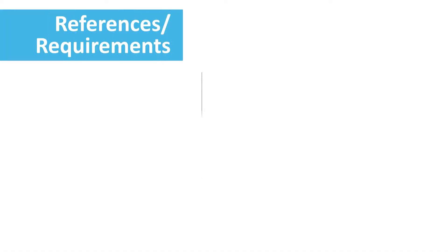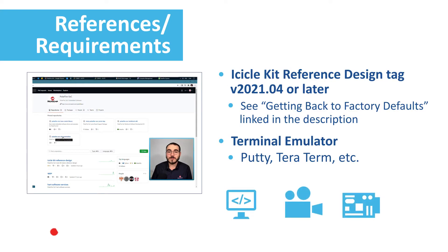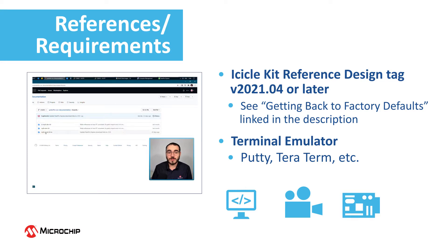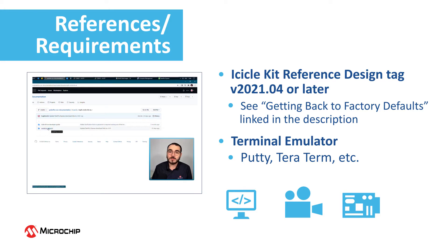To complete the steps shown in this video, you'll need the icicle kit reference design tag, version 2021.04 or later, programmed into your kit. If you're not sure how to do this, see our video called Getting Back to Factory Defaults. You'll also need a terminal emulator, such as PuTTY or TeraTerm, to use the MSS UART connections.